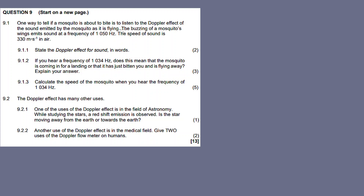All right, question nine is about the Doppler effect. One way to tell if a mosquito is about to bite is to listen to the Doppler effect of the sound emitted by the mosquito as it is flying. The buzzing of a mosquito's wings emits sound at a frequency of 1050 hertz. The speed of sound is 330 meters per second in air.